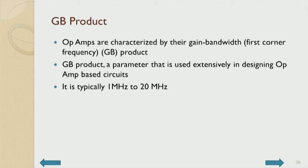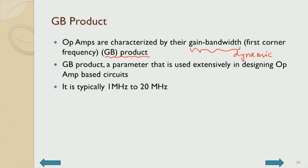Op amps are characterized by gain-bandwidth product (GBW). This is the most important parameter indicating the quality of the op amp — not just the gain, not just the bandwidth, but their product, which determines dynamic operation. A static characteristic is not as important as the dynamic characteristic where both gain and bandwidth appear together as GBW. The quality of an active device is always defined by the gain-bandwidth product, even for a transistor.